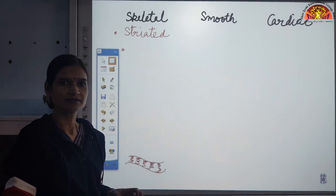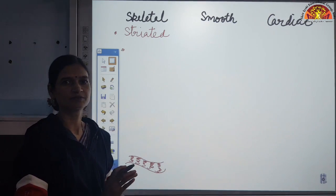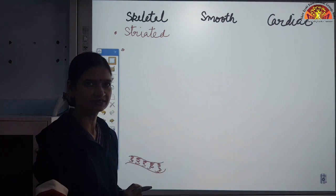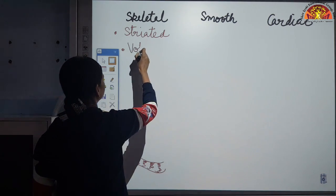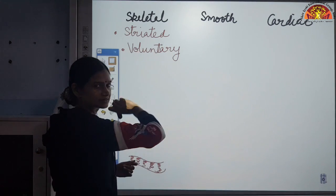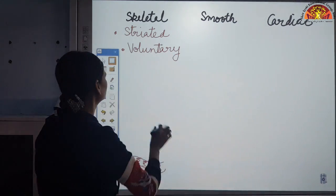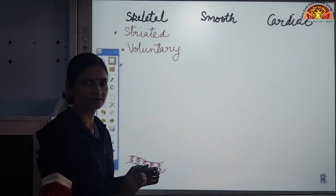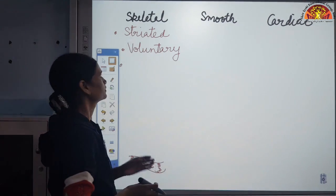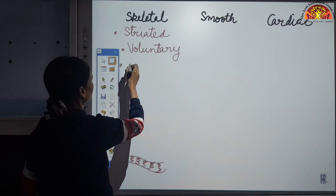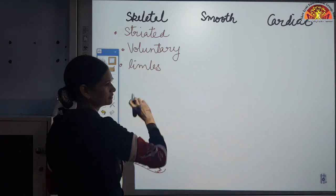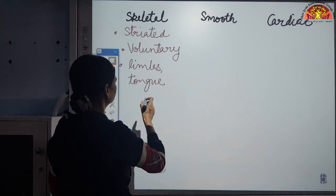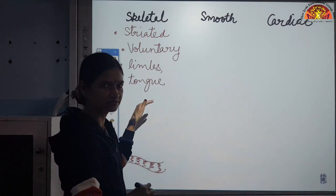These muscles are located in our hands and legs — the body parts whose movement we can perform willingly, voluntarily. So these muscles are called voluntary muscles, because we can control them according to our wish. As they are present associated with the long bones, they are also called skeletal muscles. Their shape is cylindrical and more than one nucleus is present in them — so they are multi-nucleated.